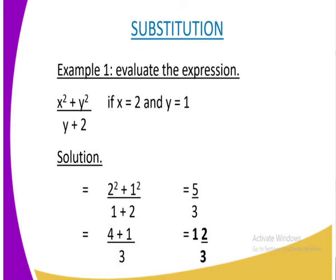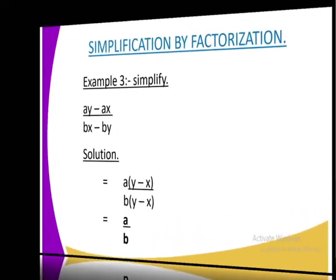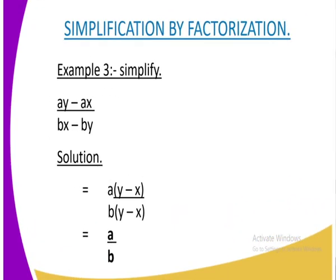On our third example, we have got ay minus ax all divided by bx minus by. Solution, here because a is common, we get a outside, then it becomes y - x all divided by b, because b is common in the denominator. We divide by y - x. Then we cancel out because now they have become common, and we are going to remain with a over b.